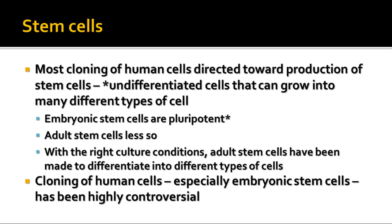Most cloning of human cells nowadays is directed toward the production of stem cells — an undifferentiated cell that can grow into different types of cells. Embryonic stem cells are what we call pluripotent, meaning they can grow into lots of different kinds of cells, while adult stem cells are less so. The cloning of human cells, especially dealing with embryonic stem cells, has been very controversial. A lot of people feel that it's immoral to do anything with human embryonic cells, and so there are very strict restrictions on dealing with them.